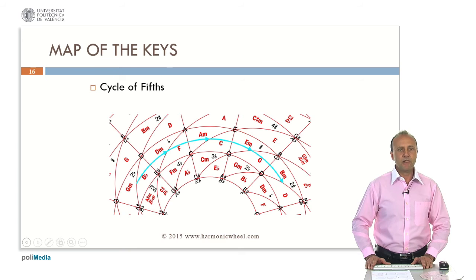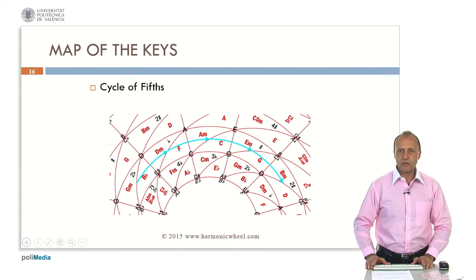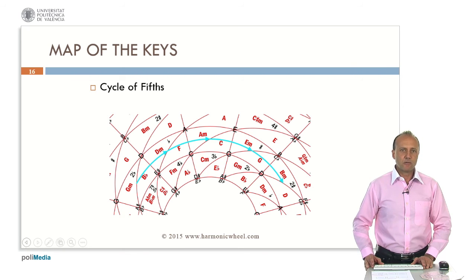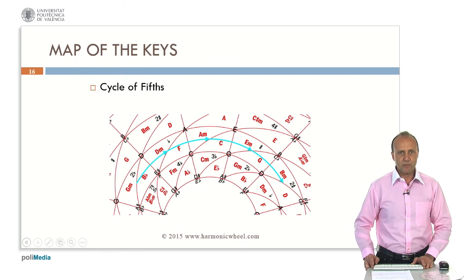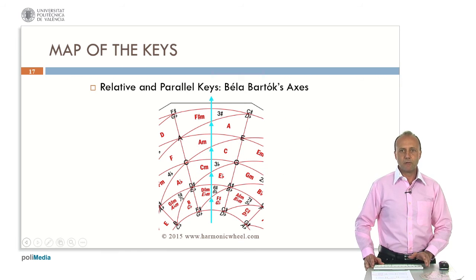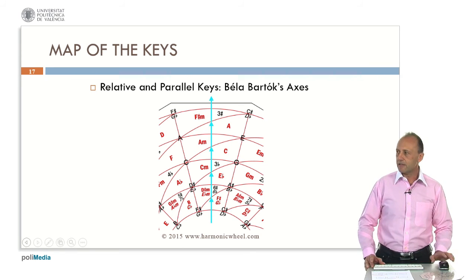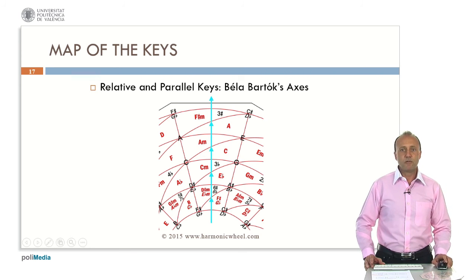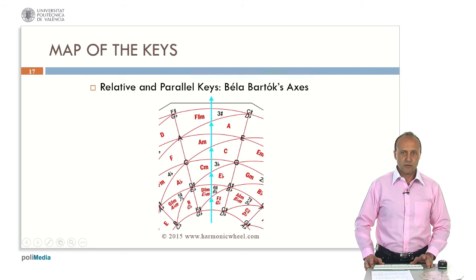There are other two important characteristics. One of them is the map of the keys. If we move along a circular line, we find a cycle of fifths, as we can see here, both for major chords and minor chords. But here we cannot see the close relationship between C major and C minor, for example. But if we move along a radial line, we find it. Here we can see C minor, C major's relative, A minor's parallel, A major, etc. In fact, this group of eight chords is known as a pair of Bella-Bartok axes.